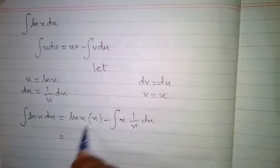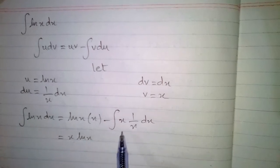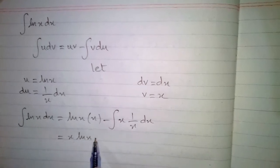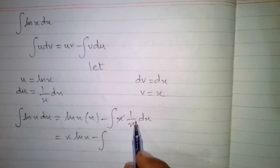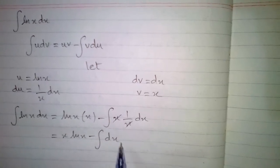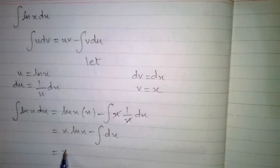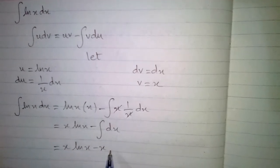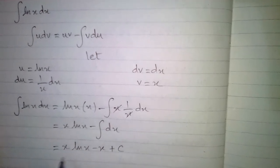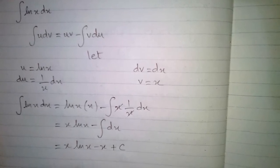This can be written as x times ln x, then minus the integral — we can cancel these x terms — so we have the integral of dx. The integral of dx is x, so we have x ln x minus x plus C, where C is the constant of integration.